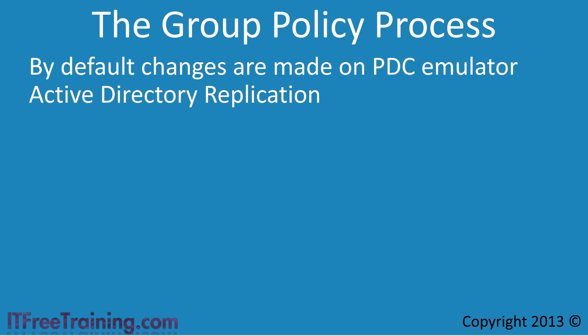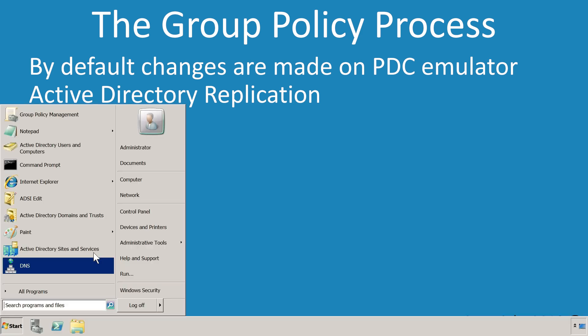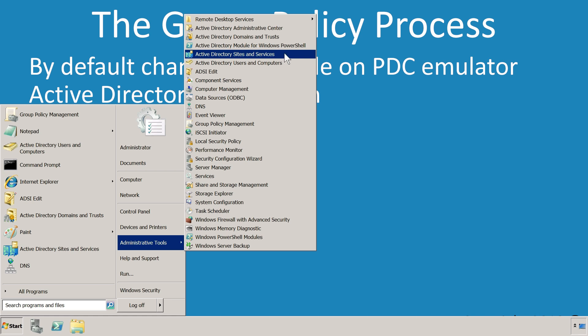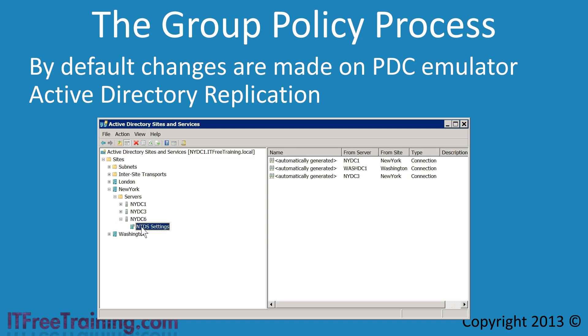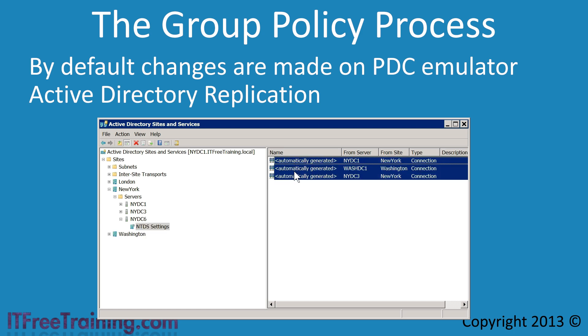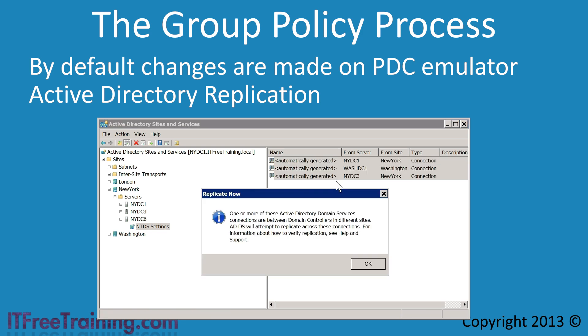If I want to force a replication of the Active Directory database, I can do this by opening Active Directory Sites and Services from the start menu. To force a replication, expand down to the server that you want to force the replication from and go into the NTDS settings folder. From here it is a matter of selecting the connection or connections that you want to force a replication on, right clicking and then selecting the option Replicate Now. A dialog box will appear informing you that replication has been triggered but you will need to use other tools to verify that the replication was successful.